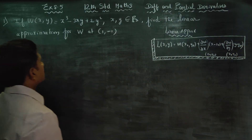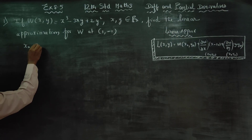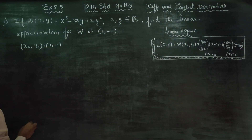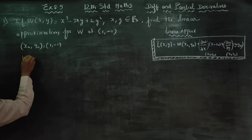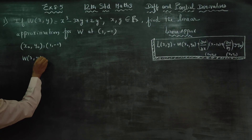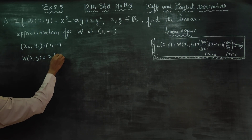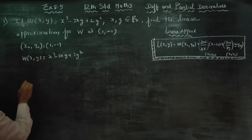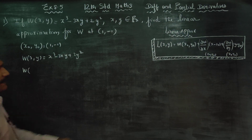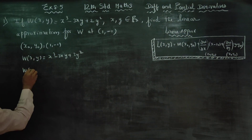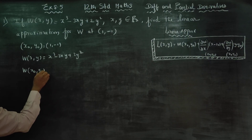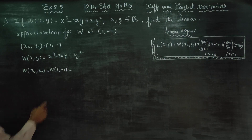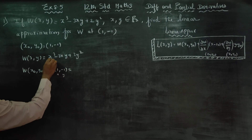First of all, my x0, y0 is the given point, that is (1, -1). The function w(x0, y0) is x cubed minus 3xy plus 2y squared. So w(x0, y0) means w(1, -1).